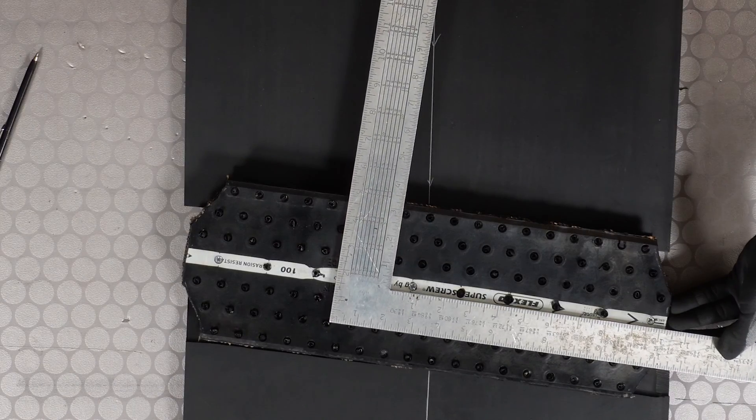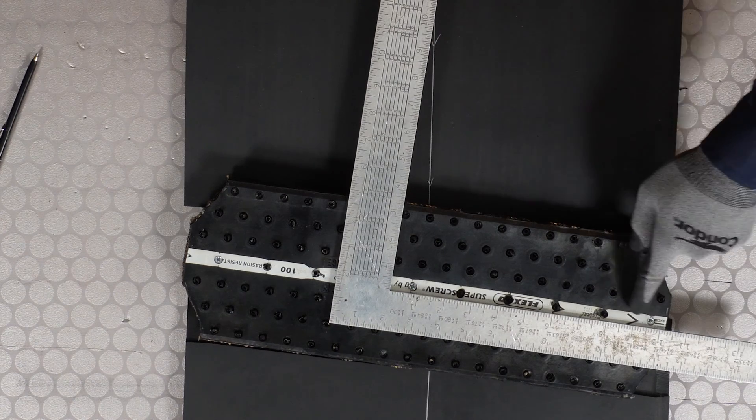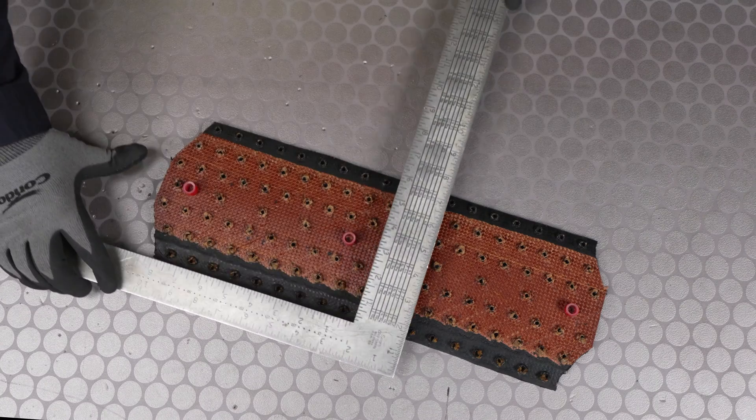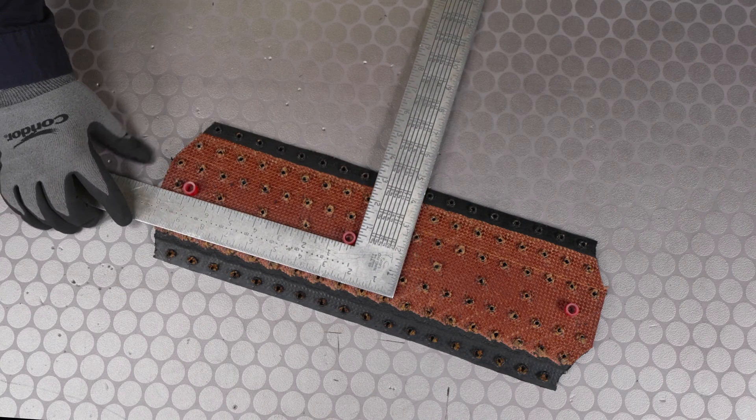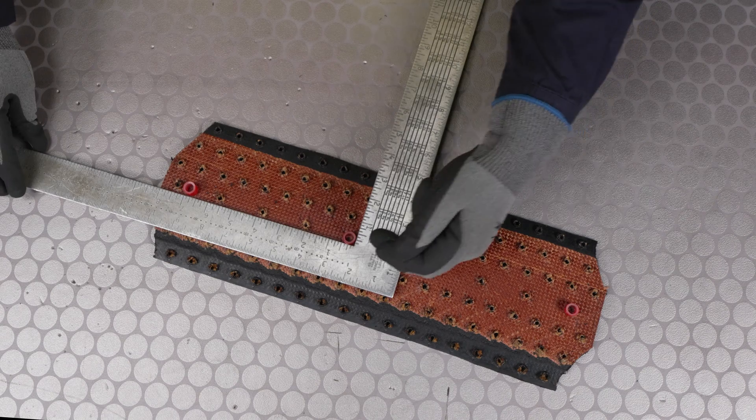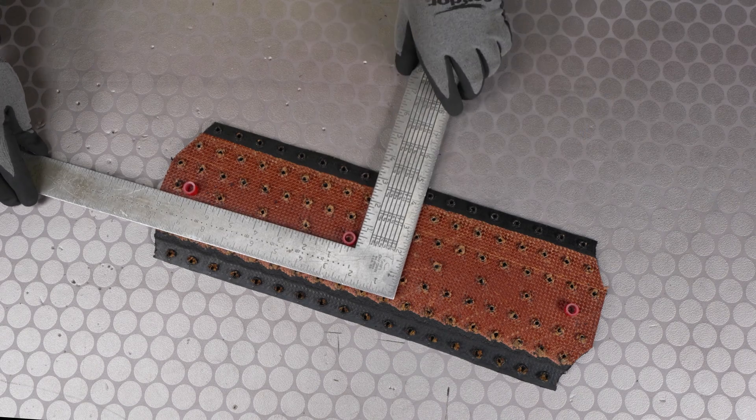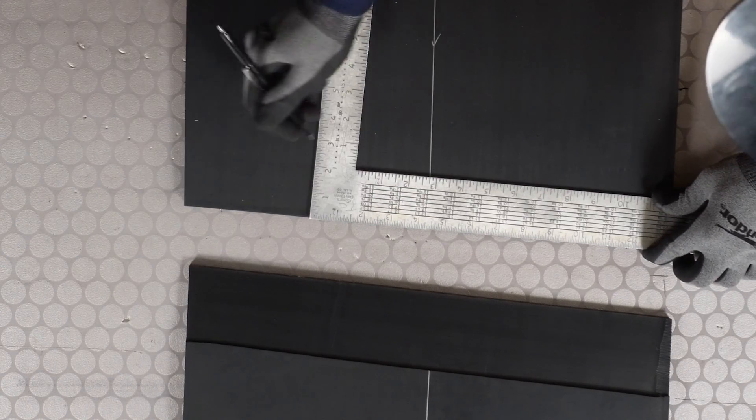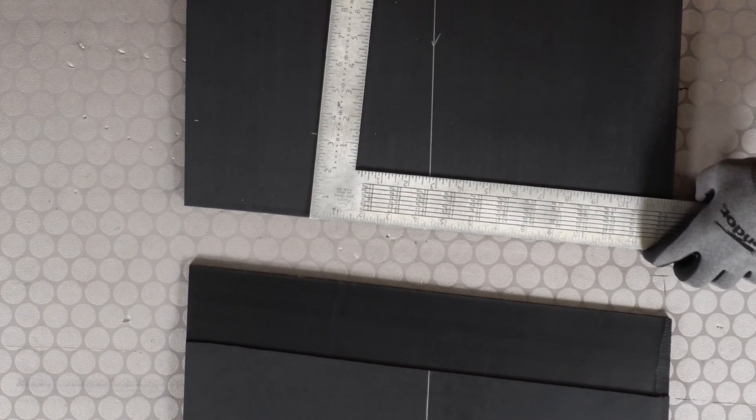To determine the longer skive distance needed on the second belt end, measure from the far side of the spacer to the other edge of the splice. Using multiple points, create a line that represents the long side skive distance on the other end of the belt.